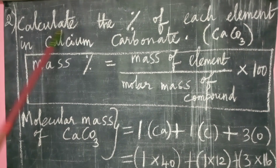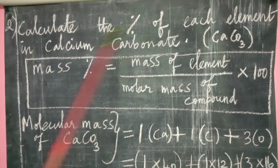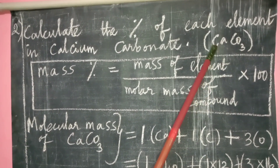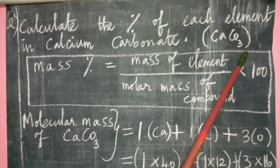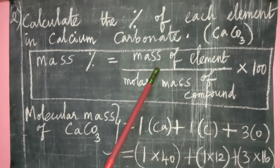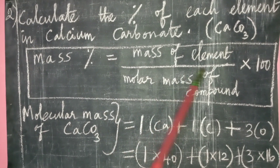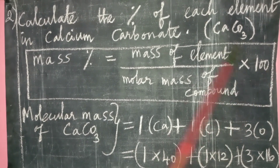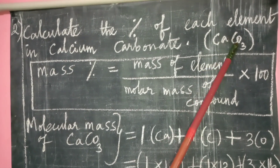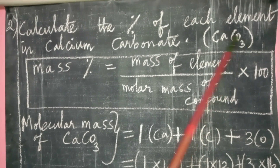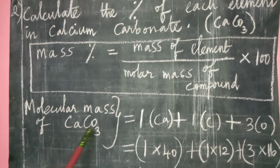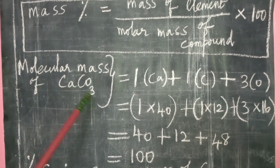Second question: calculate the percentage of each element in calcium carbonate, CaCO₃. The mass percentage formula is: mass percentage = (mass of element ÷ molar mass of compound) × 100. You have to find the percentage of calcium, carbon, and oxygen. First, find the molecular mass of calcium carbonate.